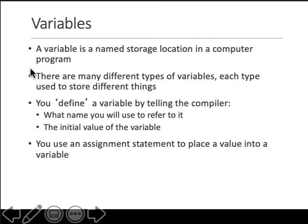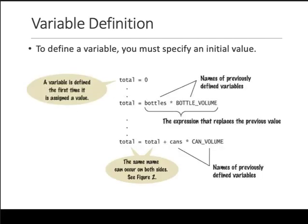You can define an initial value of the variable also. To define a variable, you must specify an initial value. When you write something like total equals zero, total is a variable that's defined for the first time, and it's given the value zero. The equal is the assignment operator. What the compiler is getting is that zero is assigned to this thing called total. Total is a variable.